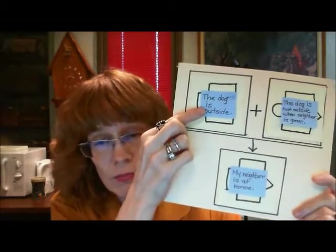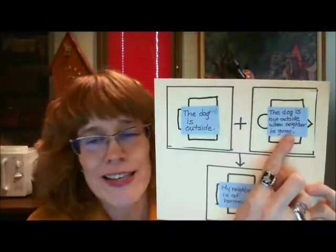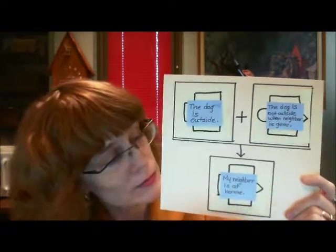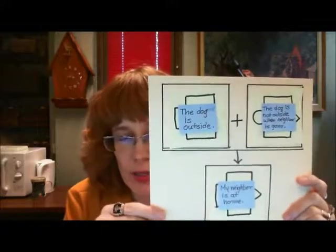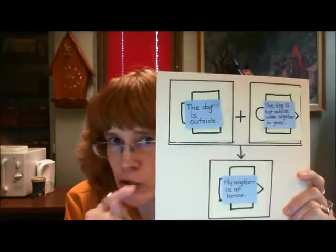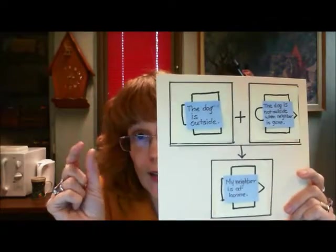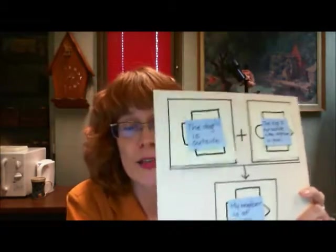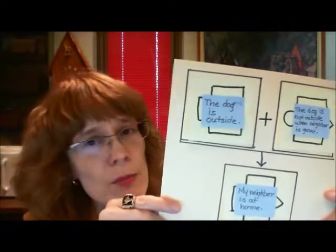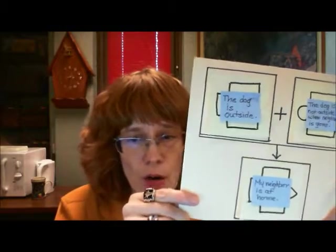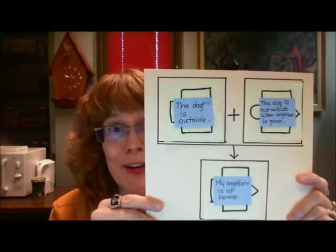The dog is outside. The dog is not outside when my neighbors are gone. Therefore, my neighbors must be at home. Now, think about the puzzle piece test. What is analogous to the circle? What's analogous to the circle are the concepts that each reason has in common. So if we look at these reasons, what do they have in common? What are they both talking about? Well, they're talking about the dog being outside.